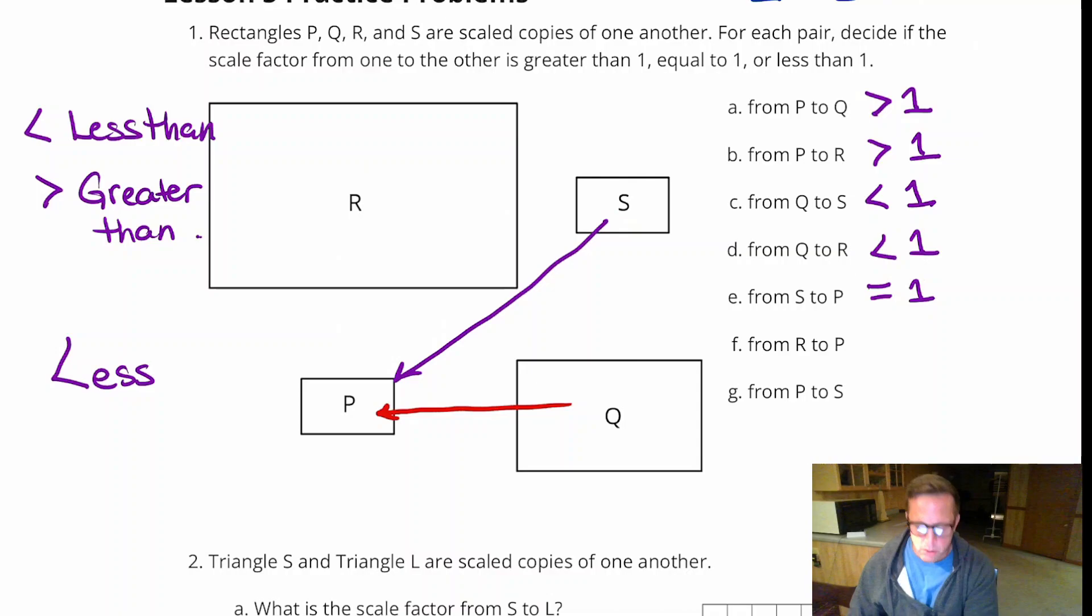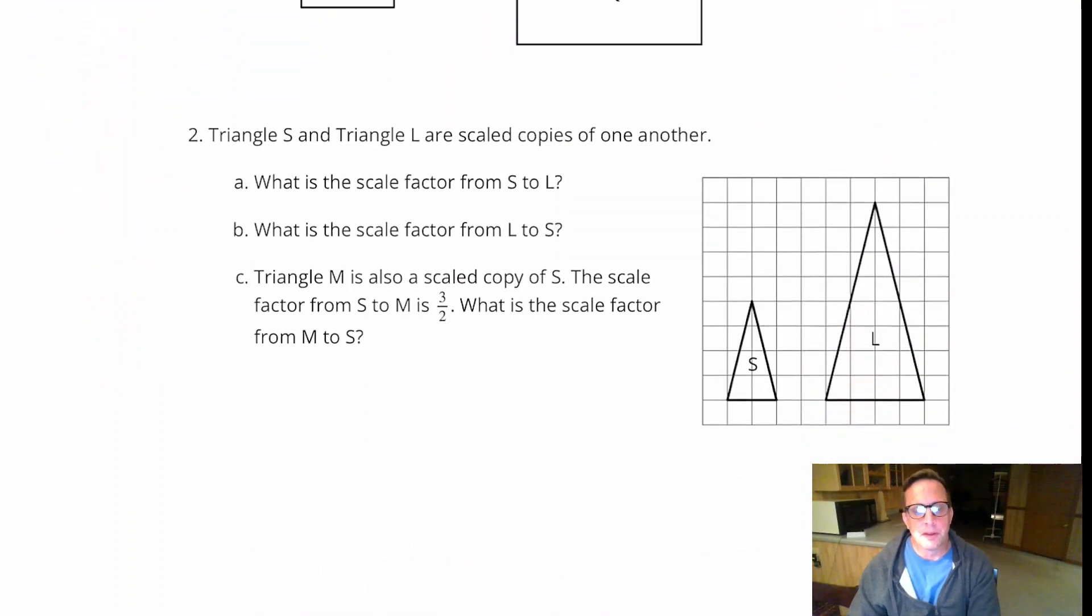And then from R to P. Now that's going from big to small, so that is going to be less than 1. And then from P to S. Now P to S is going to be the same as S to P, and that's going to be equal to 1. So those are pretty simple.